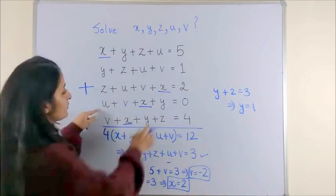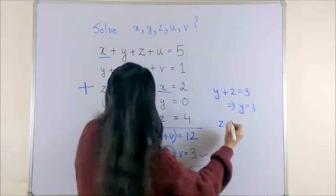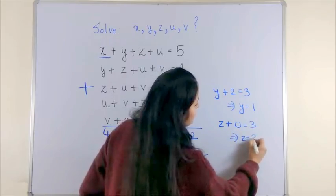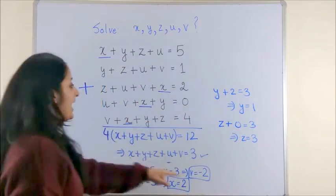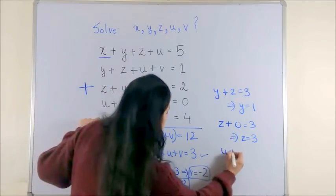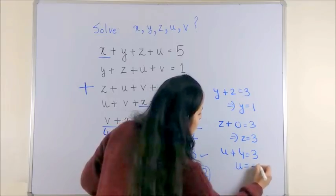And from the fourth one, what is missing is z. So, we get z plus 0 is equal to 3, which gives us the answer as 3 directly. And likewise, the last one has u missing. So, we take u plus 4 is equal to 3. That gives me u as minus 1.